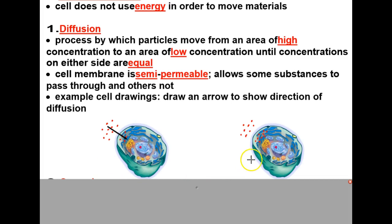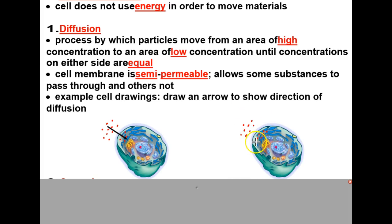In our other example to the right, inside the cell we have nine particles and on the outside we have eight. This means we have a higher concentration of particles inside the cell and a lower concentration outside. So one particle would move outside, and then there'd be nine outside and eight inside, with one particle constantly traveling back and forth because of the odd number.